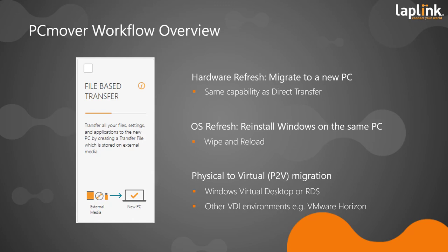With the file-based transfer for an OS refresh, you export information from the old environment, re-image the PC, and then import it back in. The file-based transfer also supports P-to-V migrations — whether migrating to an on-premises VDI environment, a cloud-based VDI such as Windows Virtual Desktop or Amazon Workspaces, or migrating from VDI to VDI, on-premises or in the cloud.